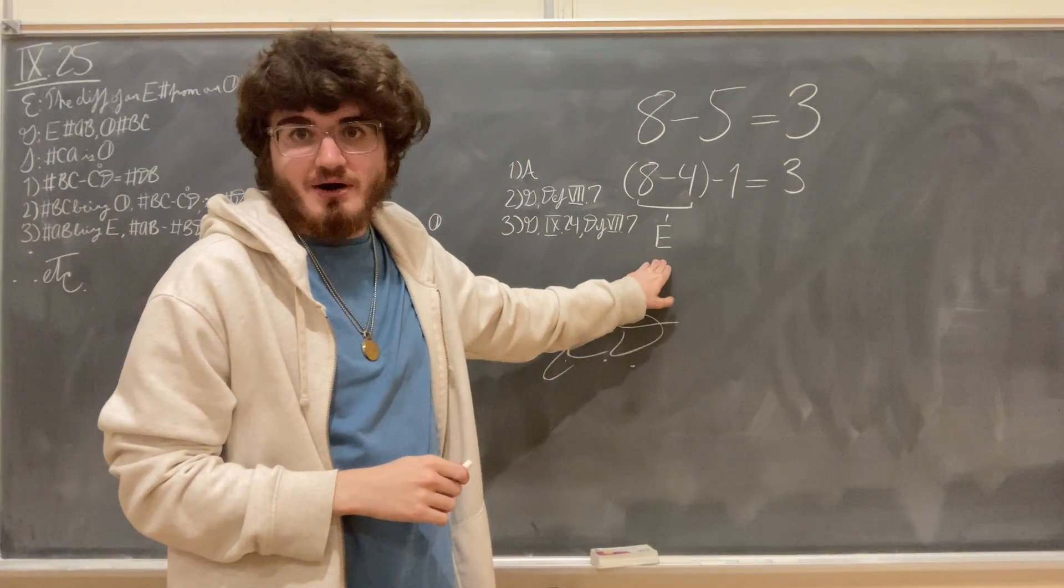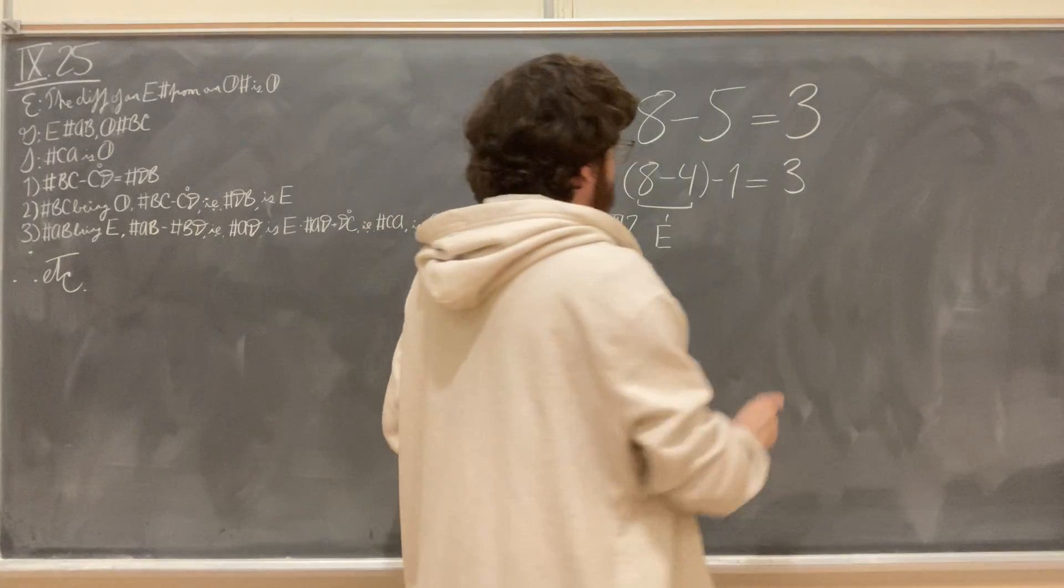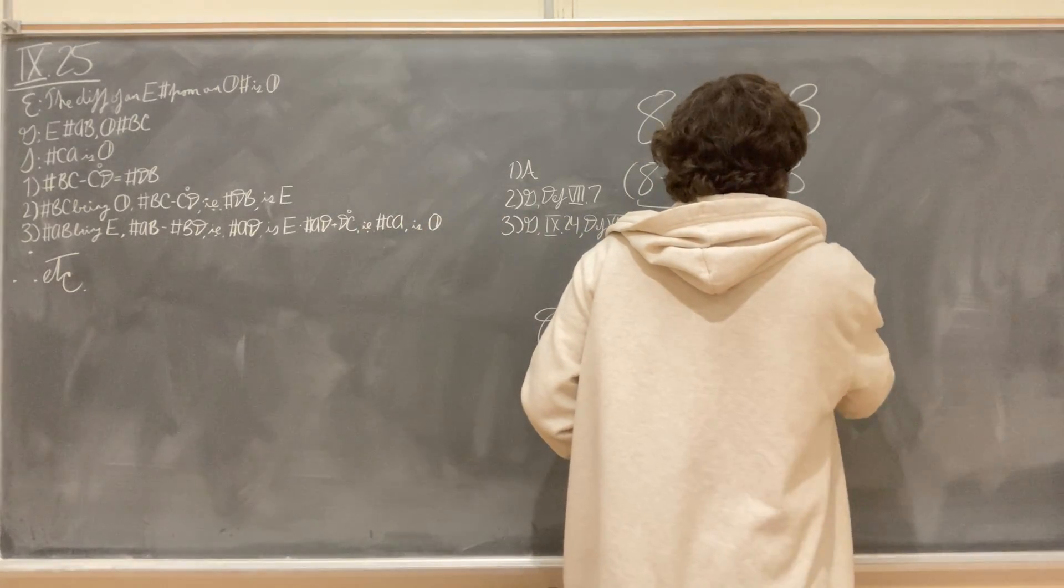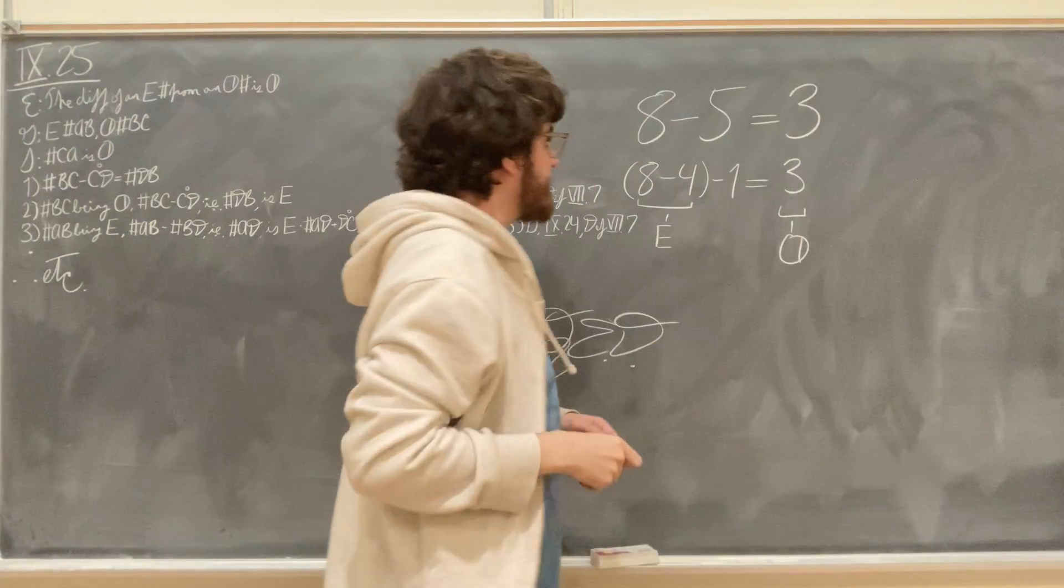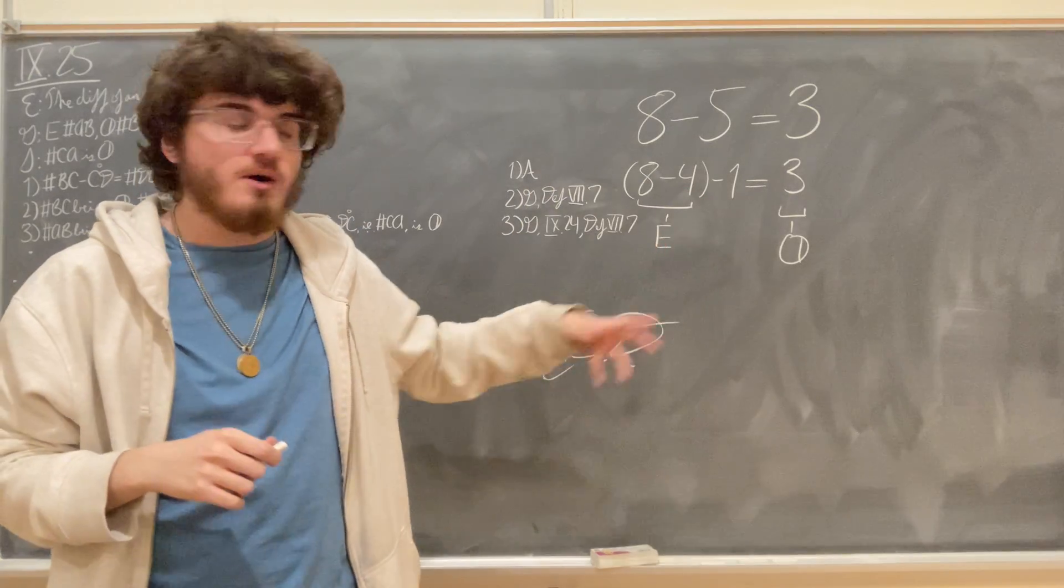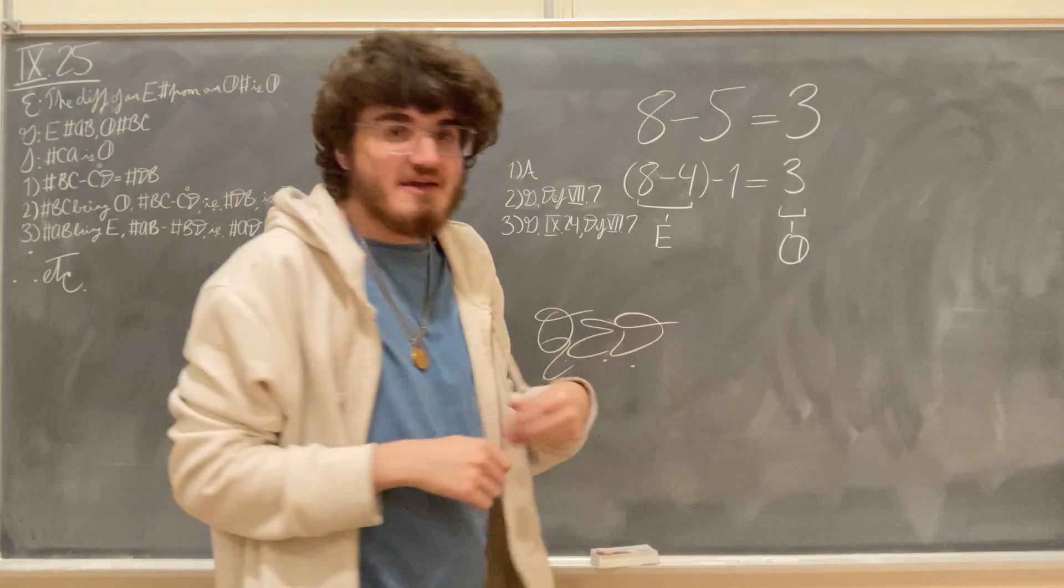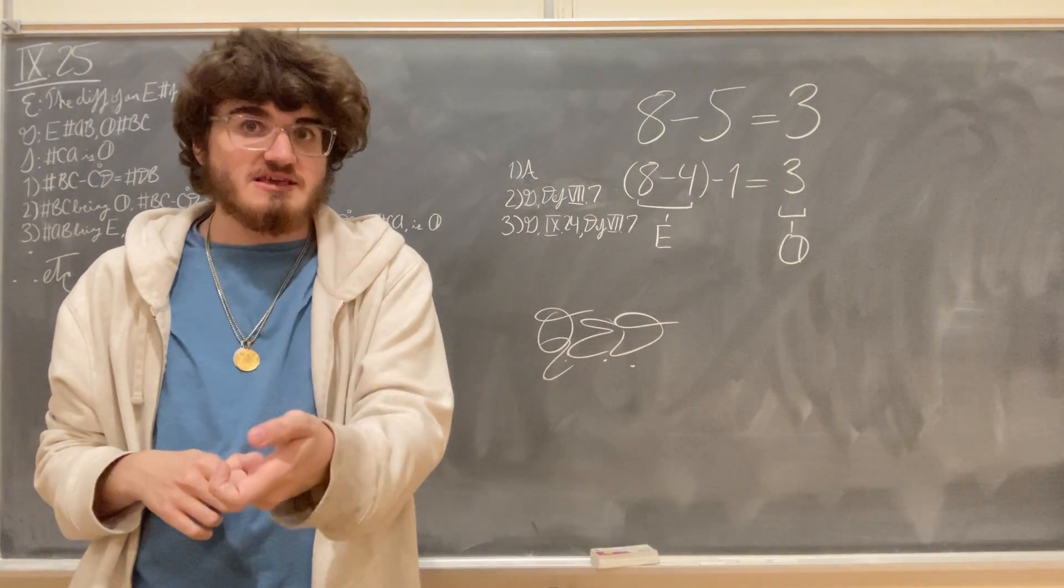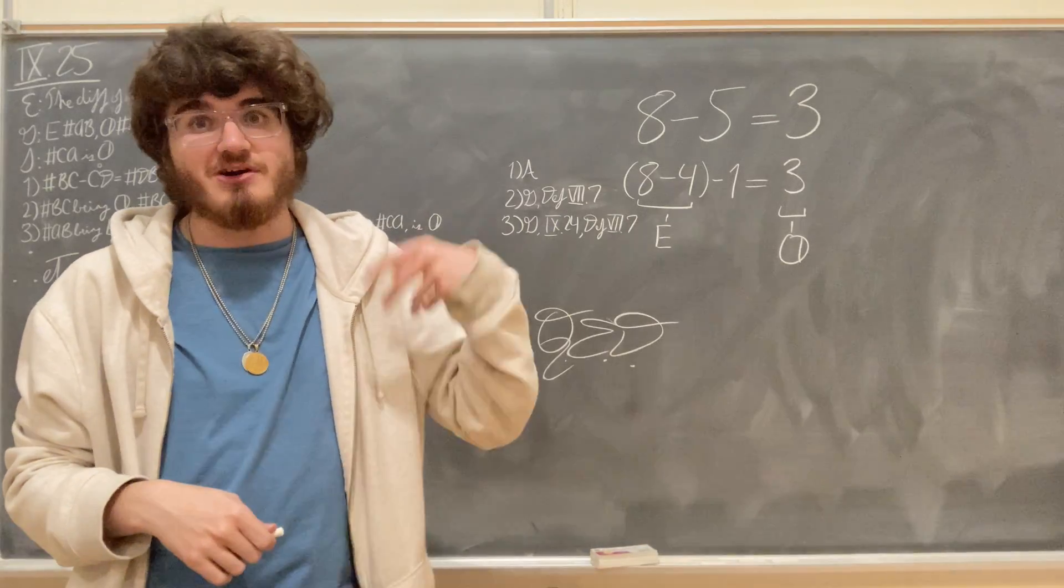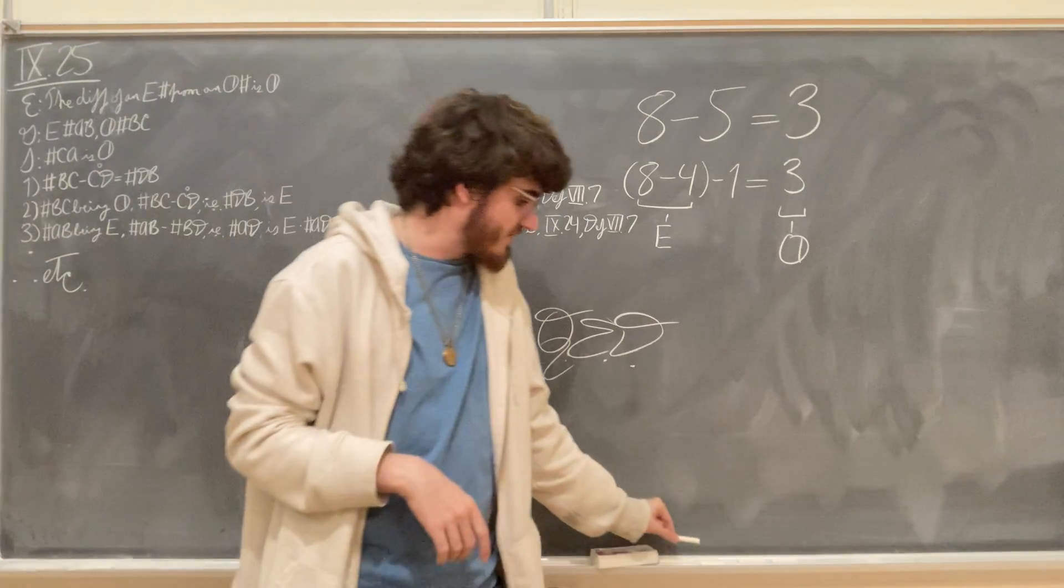So because this is an even number, if we take 1 away from it, we'll get an odd number according to definition 7. So that's how we know that the difference of 8 and 5 or the difference of any even number from any odd number will therefore also be an odd number.